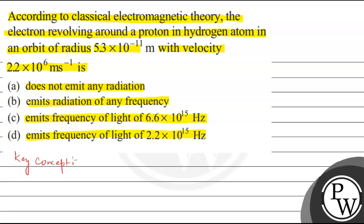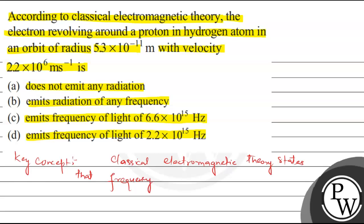The key concept we use here is that classical electromagnetic theory states that the frequency of emitted radiation is equal to the frequency of the revolving electron.